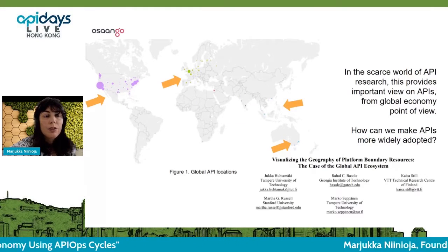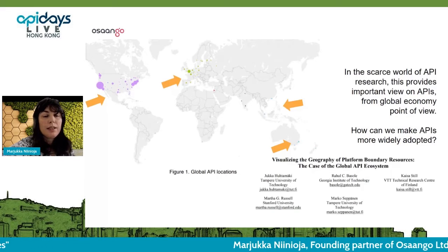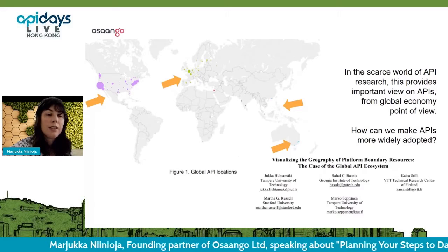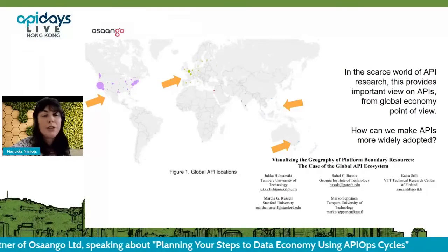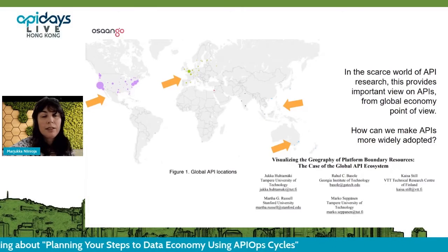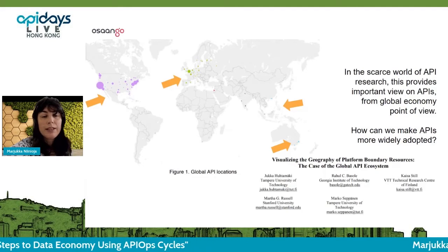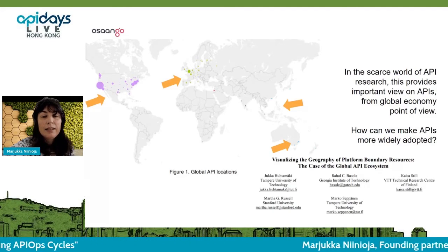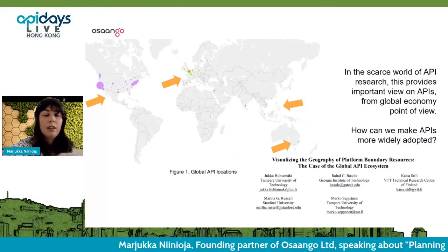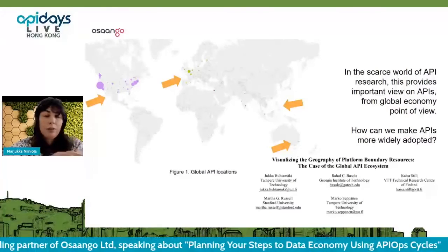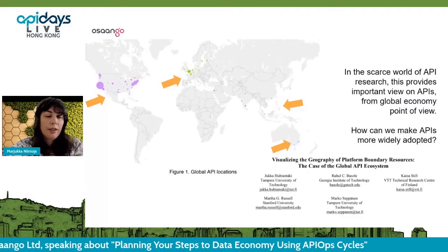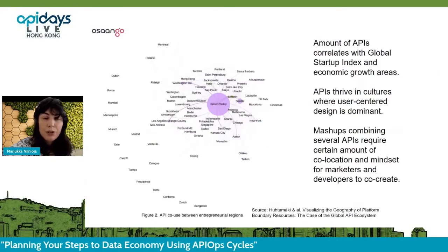Why I'm talking about API Cycles and data economies is because there is a need to do a lot of things around the world — not just in Silicon Valley or France. The API scene is starting to really develop in Hong Kong and a lot of places in Asia. I think it's really important to understand what makes or breaks the API and the data economy, and that's why I'm sharing some examples and the API Cycles method with you.